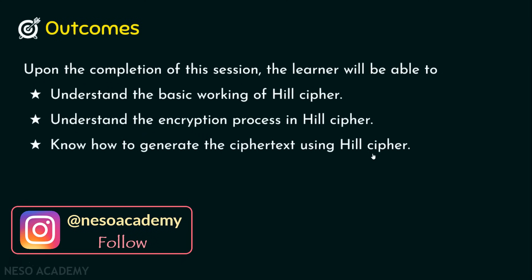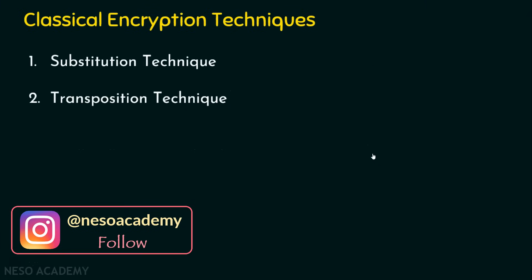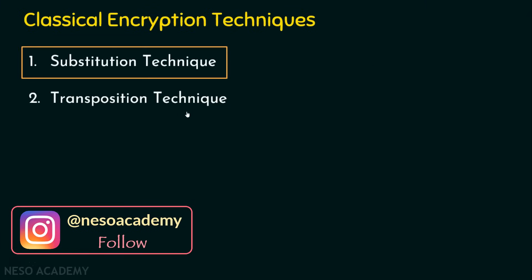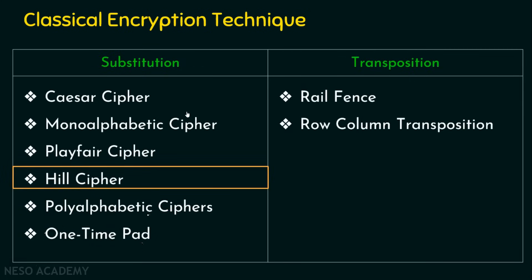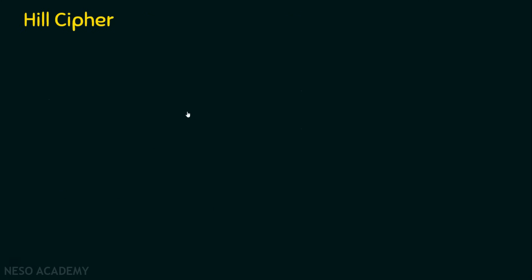We know basically the classical encryption technique consists of the substitution technique and the transposition technique. We are now in the substitution technique and we are going to see about Hill Cipher in this presentation.